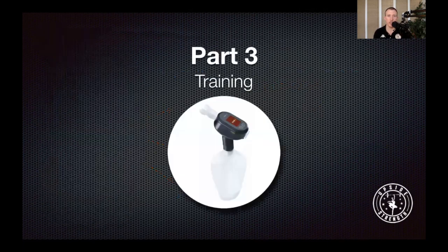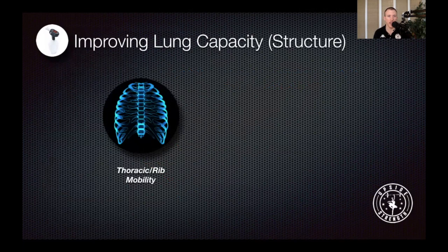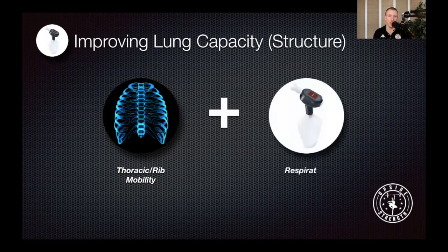Now that we know how to read the results and determine whether a respiratory limitation is present, let's talk about the training aspect. How can we improve our lung volume from a structural standpoint? We first want to determine whether the person can fully move their rib cage in and out, and make sure that person can rotate, flex, and extend their thoracic spine. If that's not the case, that might be the reason why they cannot breathe in enough air or breathe out fast enough. So we want to address that structural component first, then combine it with some respiratory training.